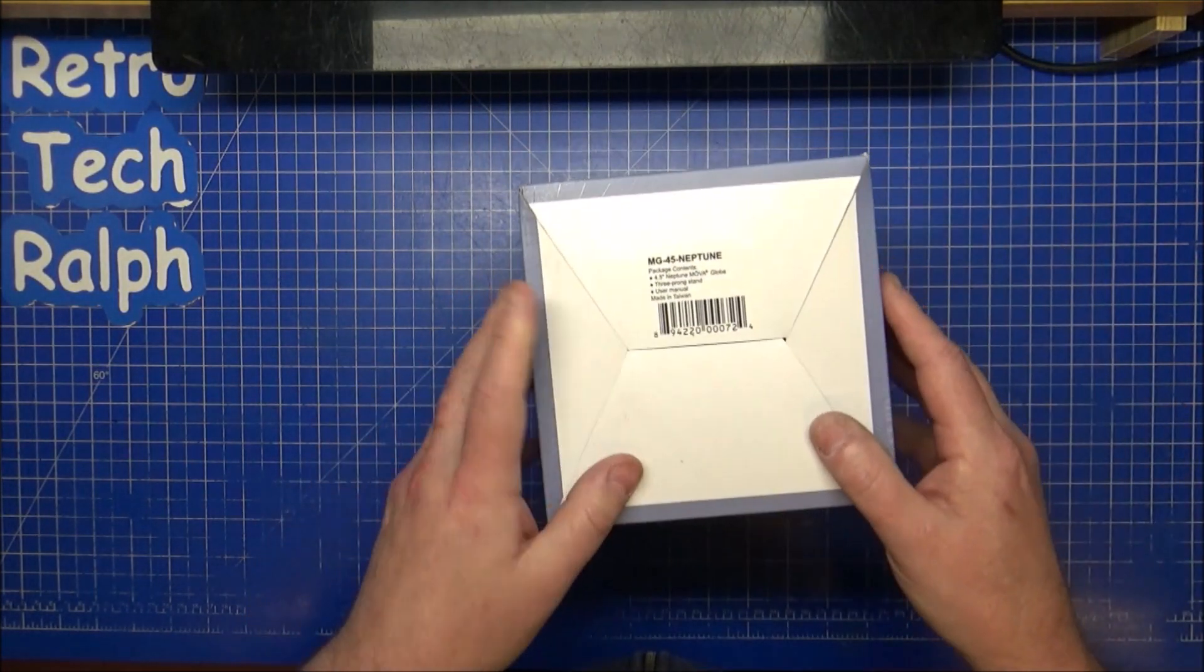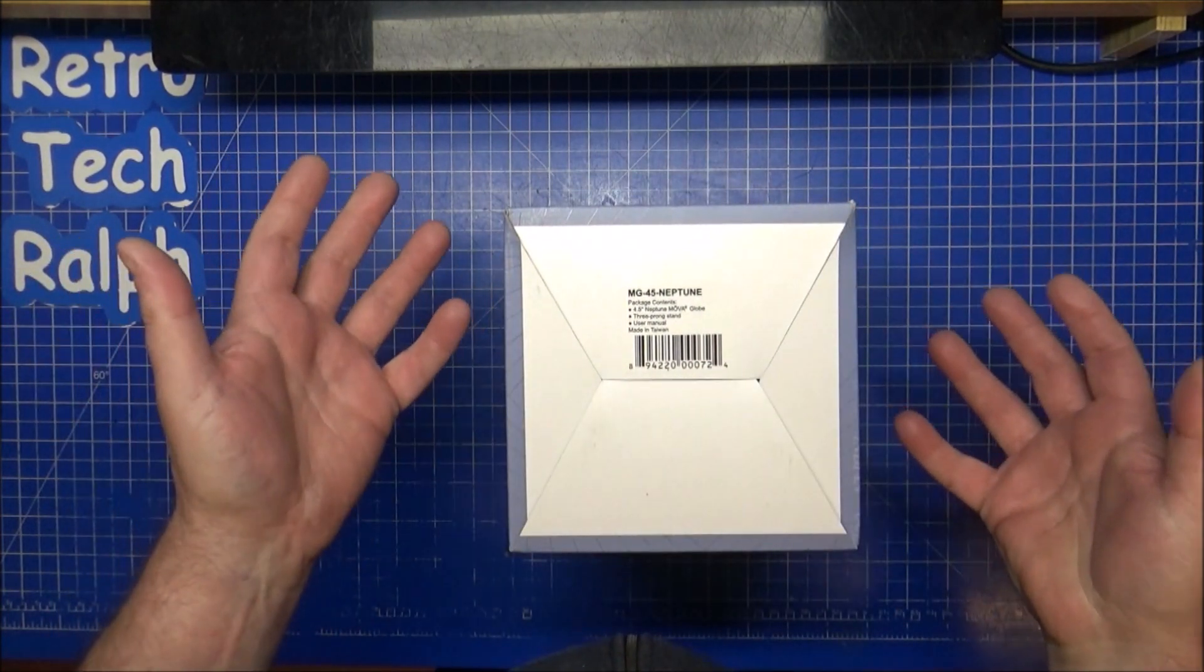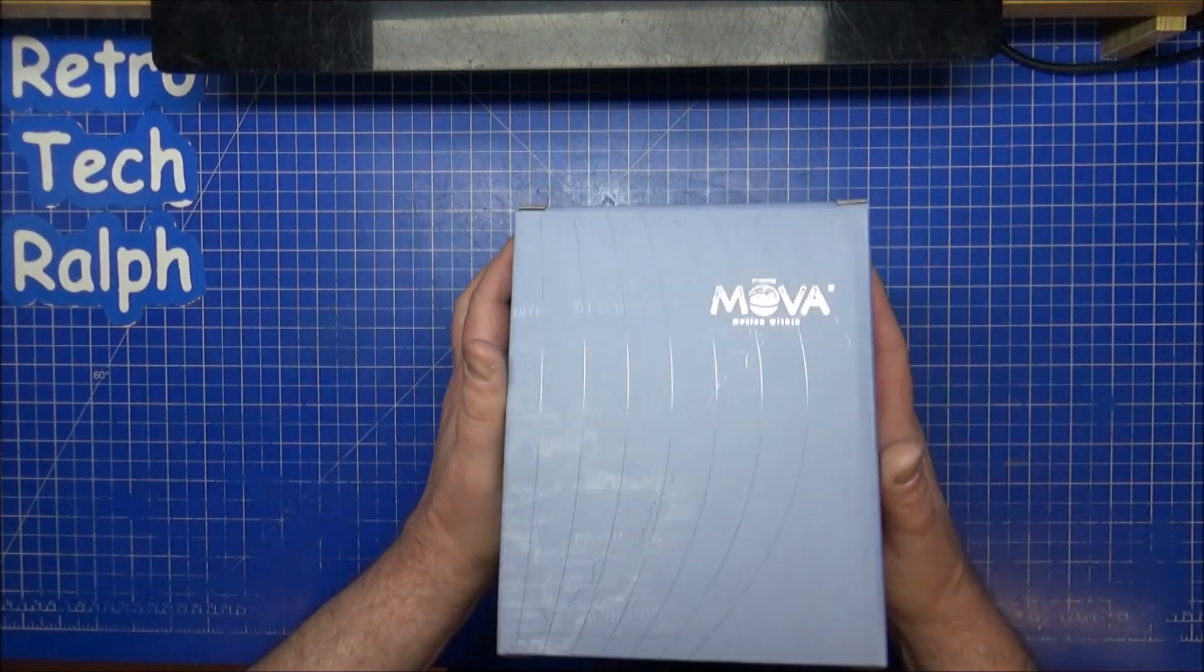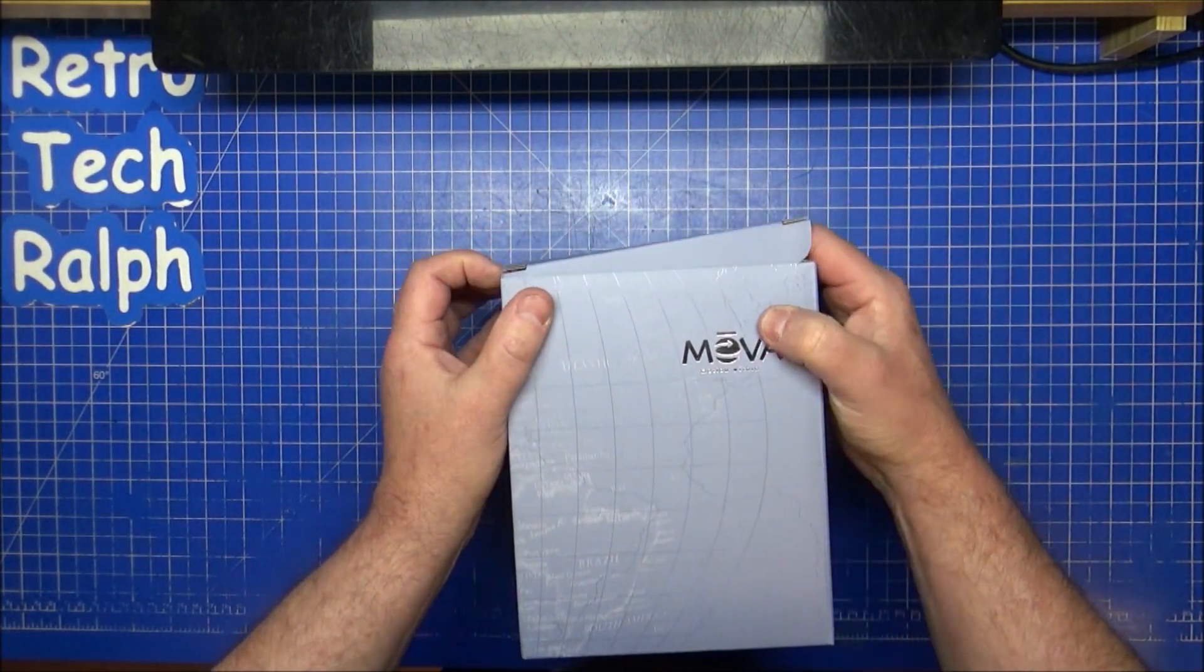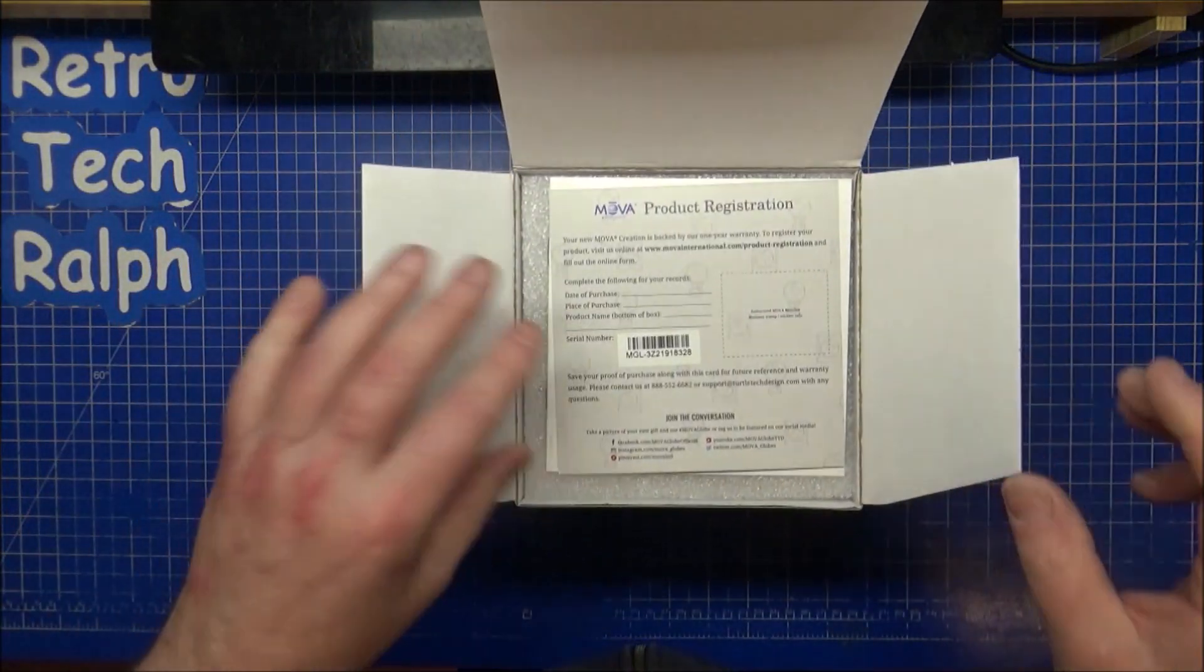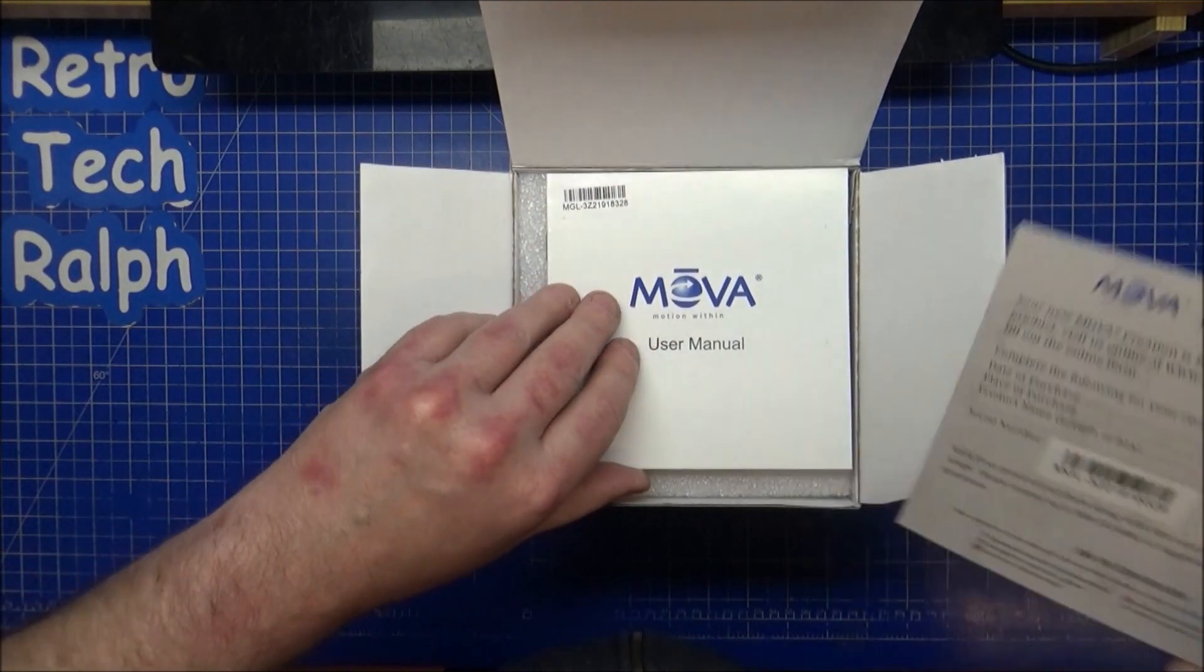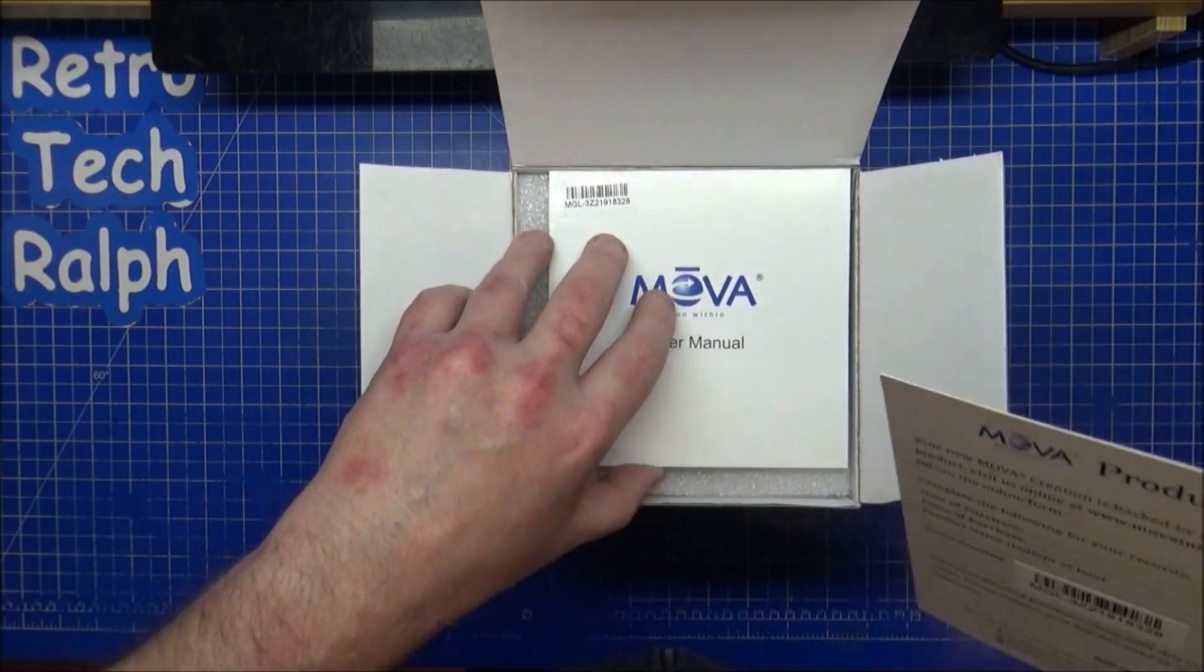It's in a lighter blue box. On the bottom I've got MG-45 Neptune. Neptune is the furthest out planet that we actually have in our solar system. It used to be Pluto, and there is a Pluto in the Mova collection which I do want.